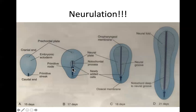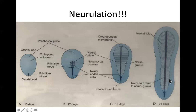The neural plate extends following the notochord all the way from the primitive node out to the precordal plate. Once it reaches the precordal plate — which changes its name to the oropharyngeal membrane — you start to see a groove form in the middle of it called the neural groove. As the neural plate thickens on either side of the neural groove, you see structures called neural folds forming.